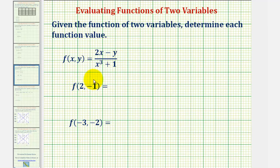So for f of two comma negative one, we'll substitute two for x and we'll substitute negative one for y.